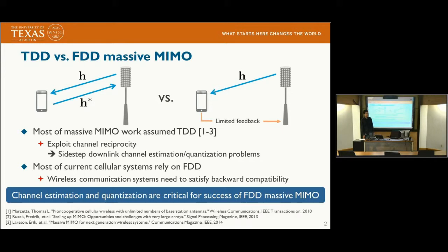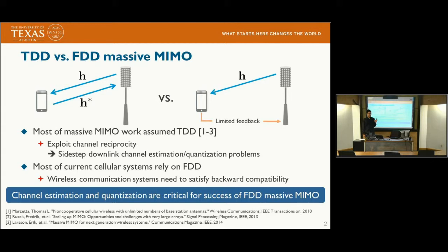The benefit of Massive MIMO is well known. It can support a large number of users simultaneously to boost network throughput, and it can also improve energy efficiency by deploying a small power amplifier in each antenna. To obtain the full benefit of Massive MIMO, the base station needs accurate channel knowledge.